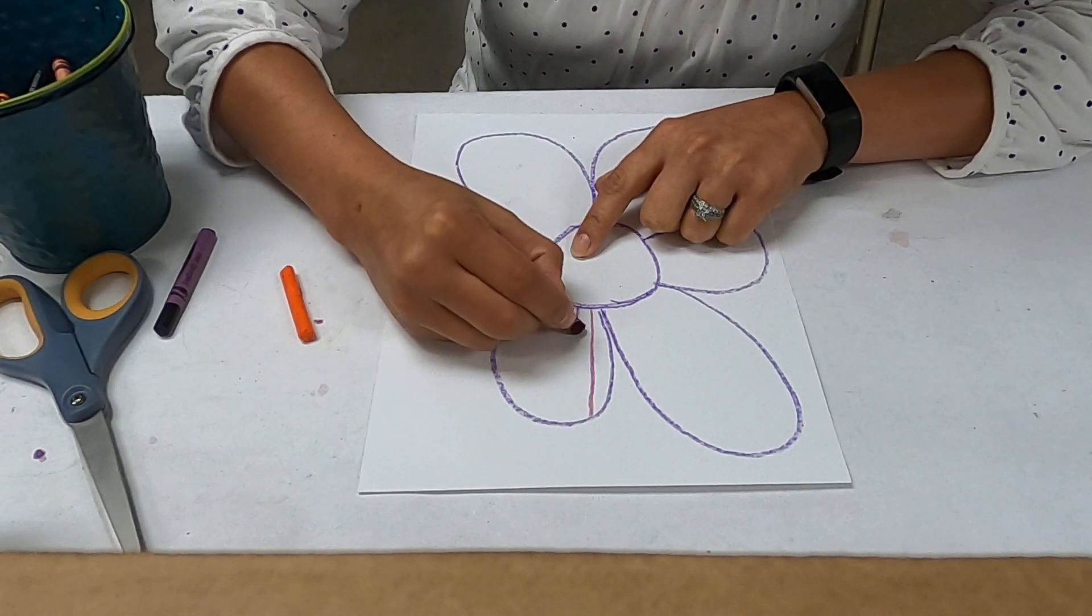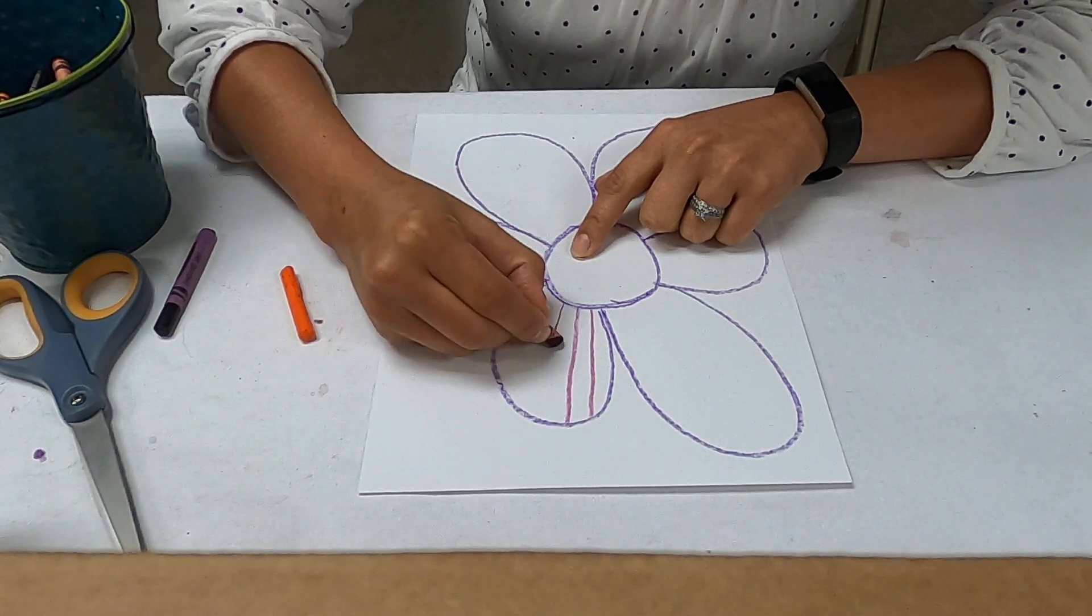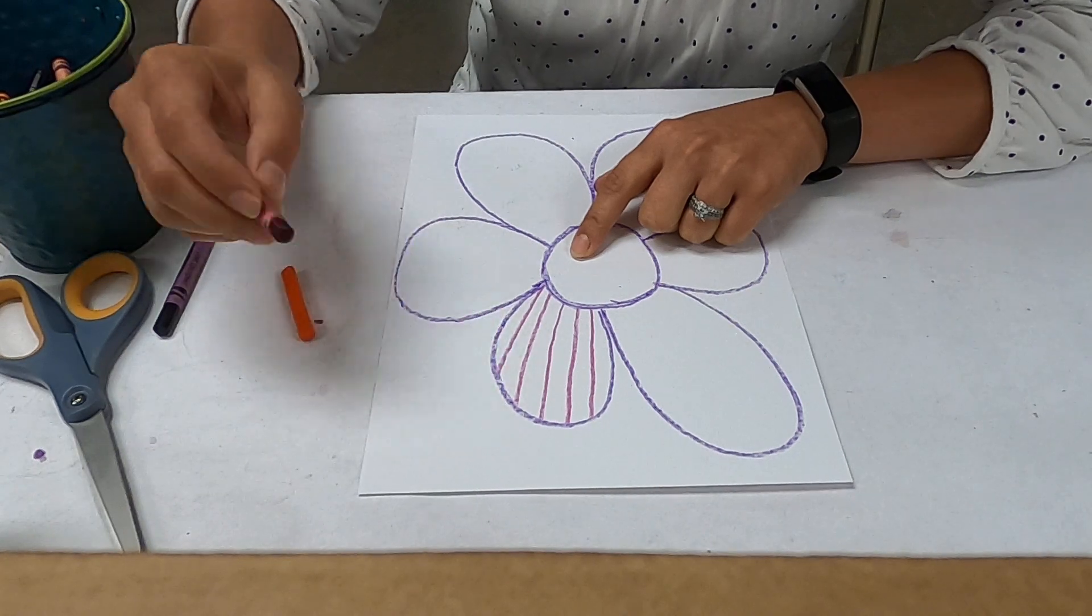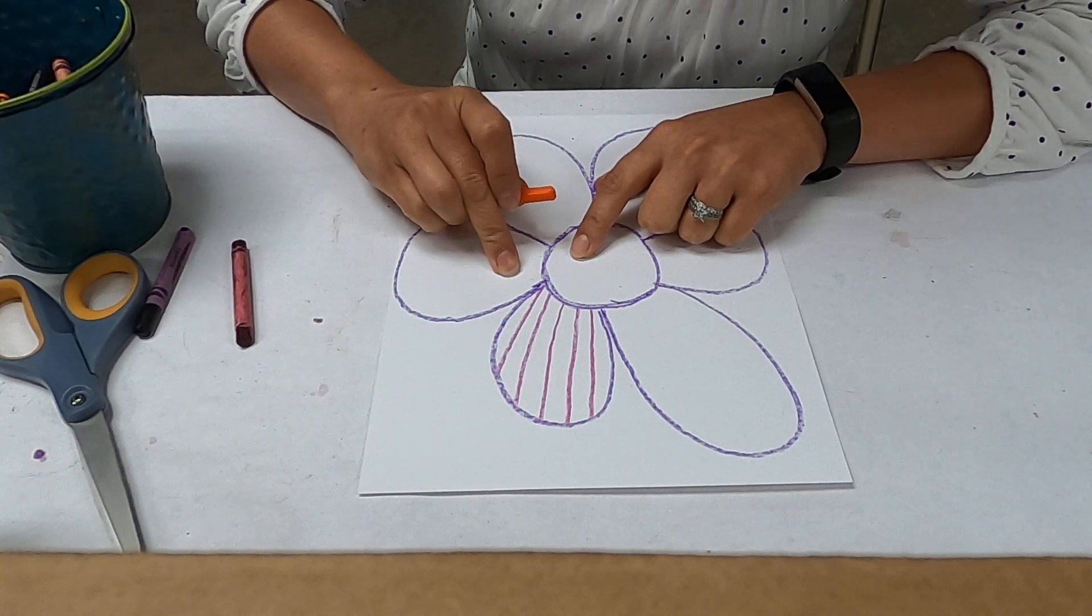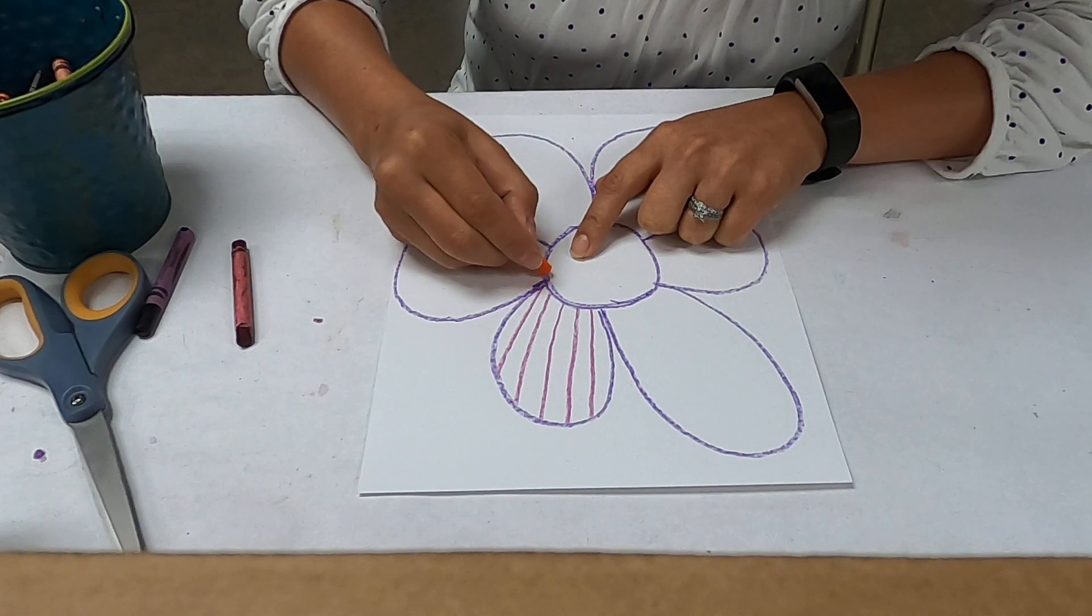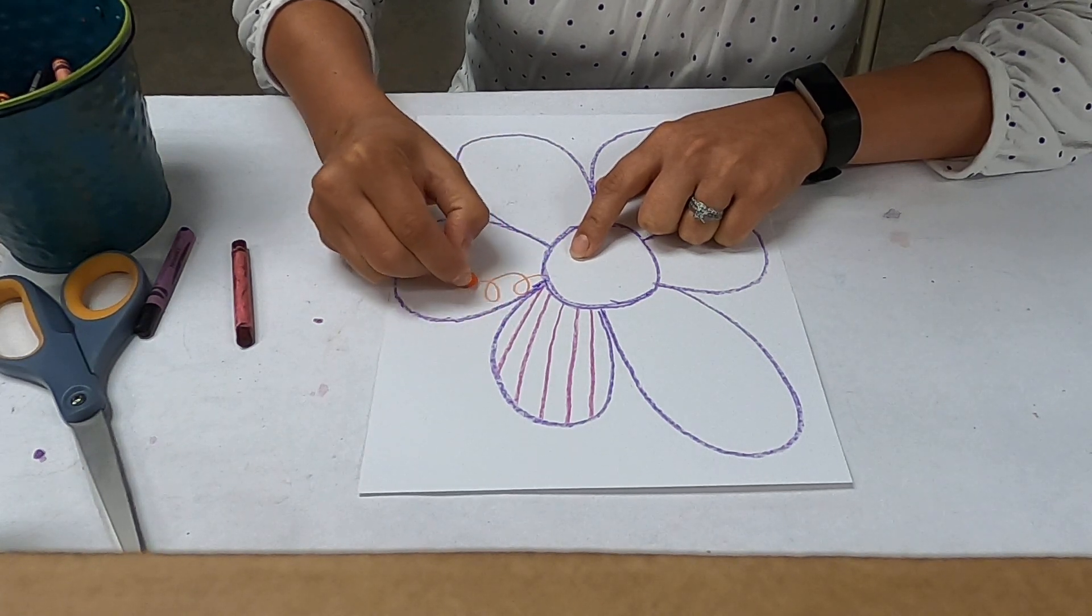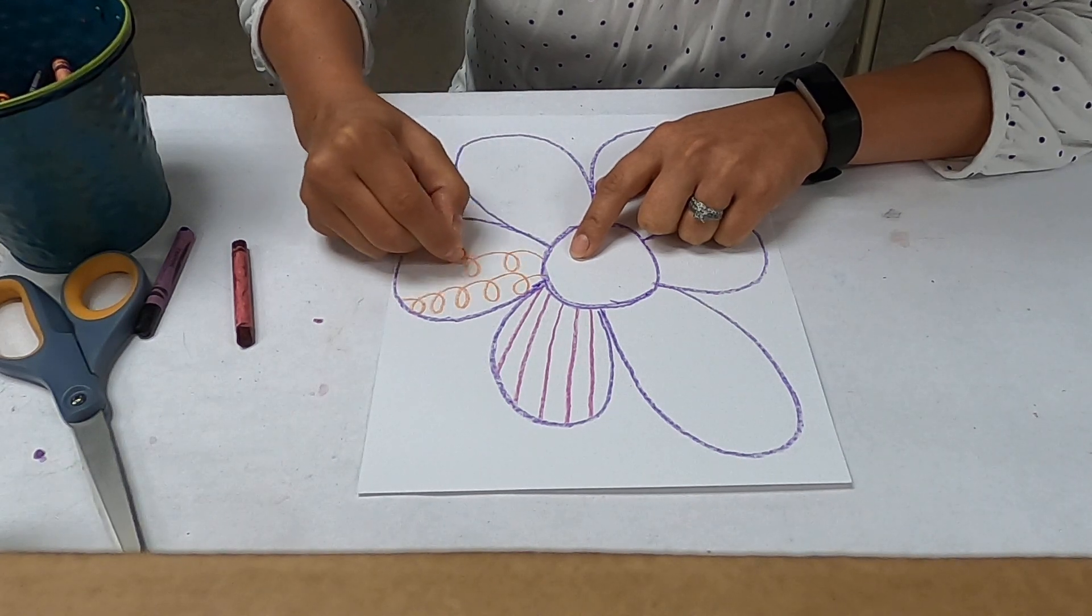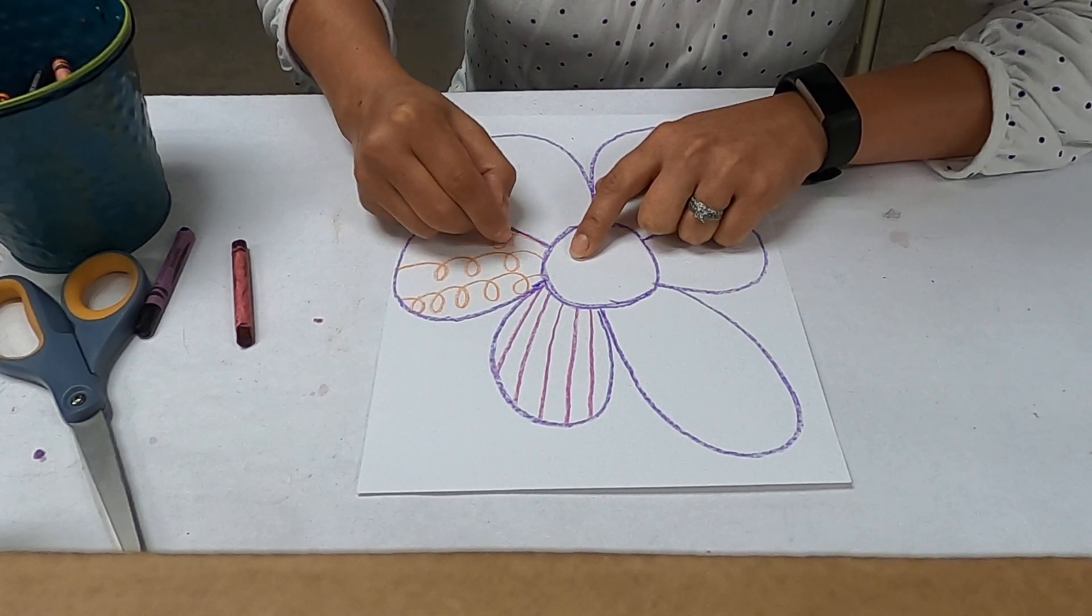Now in this petal I'm going to do some loop-de-loop lines like this. So I go loop-de-loop, loop-de-loop, loop-de-loop. So that's a different kind of line right there.